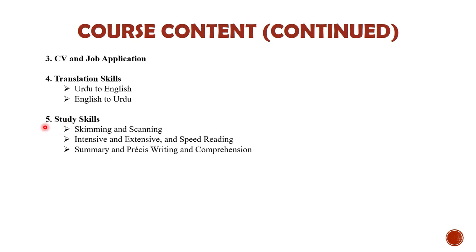Topic number five is study skills. This topic is quite comprehensive because it has many sub-skills underneath. For example, we will see what is skimming and scanning — very technical terms for reading or quick reading skills. Intensive and extensive reading, and also we are going to be introduced to speed reading. Then summary and précis writing and comprehension. The study skills are going to be quite lengthy and will require more time than the previous topics.